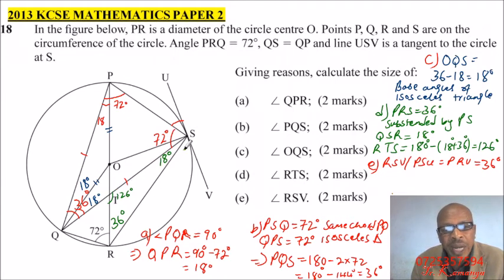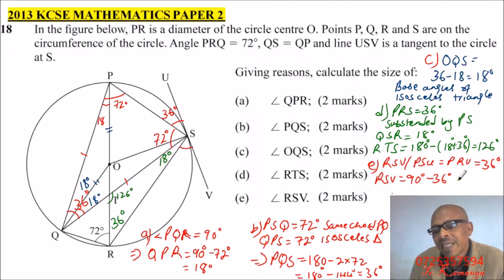So PSU is equals to PRV is equals to 36. So if that angle is 36, this angle here, PSR is 90 because it is subtended by the diameter. So from 90, then we can be able to get the other angle. If this angle is 36, then it means this angle is 90. So RSV is equals to 90 minus 36 degrees, and that should give you 54 degrees. So that is how you do that.